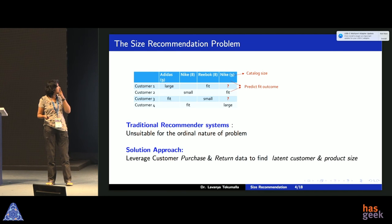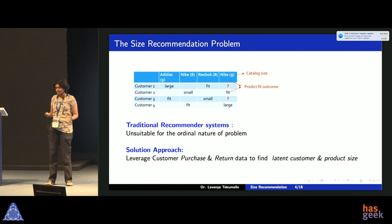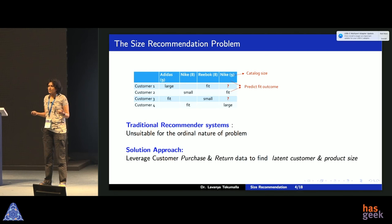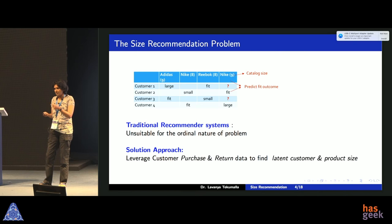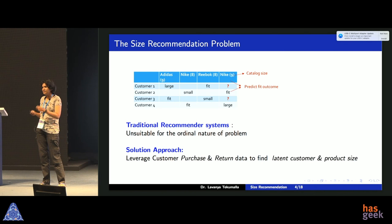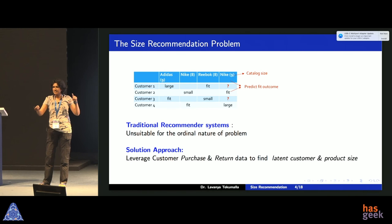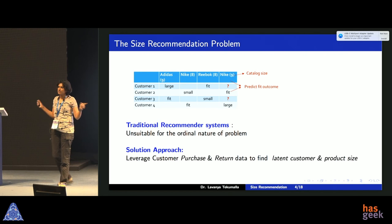We want to leverage customer purchase and return data. The approach we take is to find the actual true size of customers and products and use this to make recommendations. If I know a true size for the customer and a true size for every product, then given a parent product, I would pick the child product which is closest in size to the customer's true size. That's the intuition — that's how we want to do it.